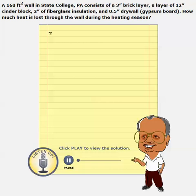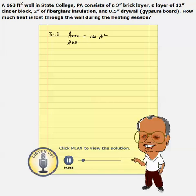In this problem, we are trying to calculate heat loss through a heating season. We are given the area of the wall, which is 160 square feet. And we are given the heating degree days for the season — this is State College, therefore we can take it as 6,000 degree days.